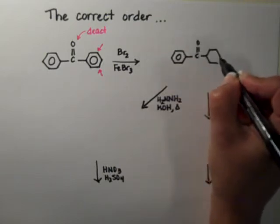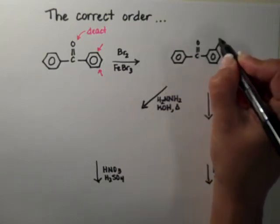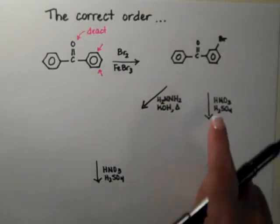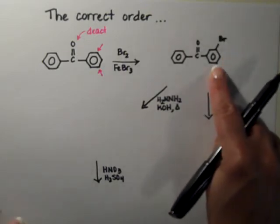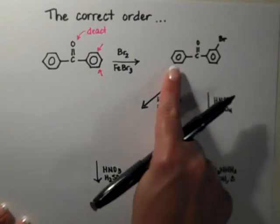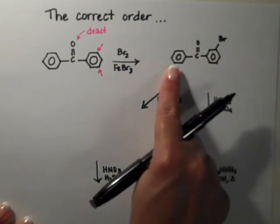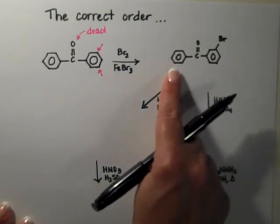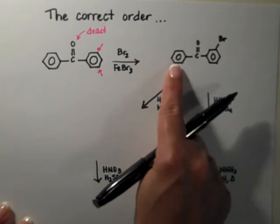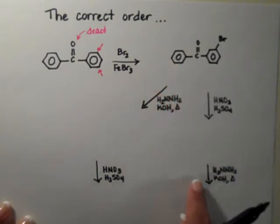Once you actually put the bromine on one of the rings, now this ring has two deactivating groups on and this ring has only one deactivating group attached to it, so the next reaction would actually have this ring as the most active of the two.